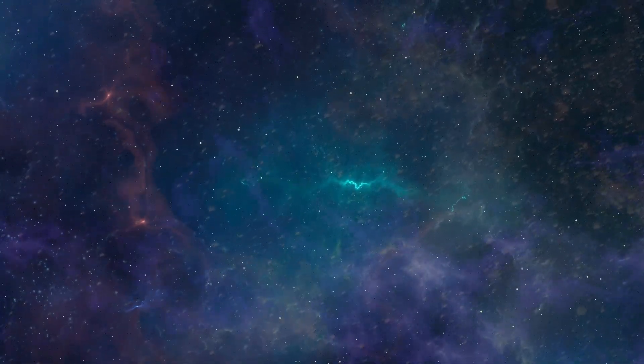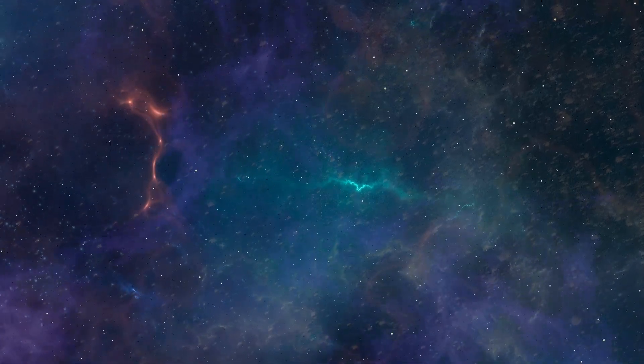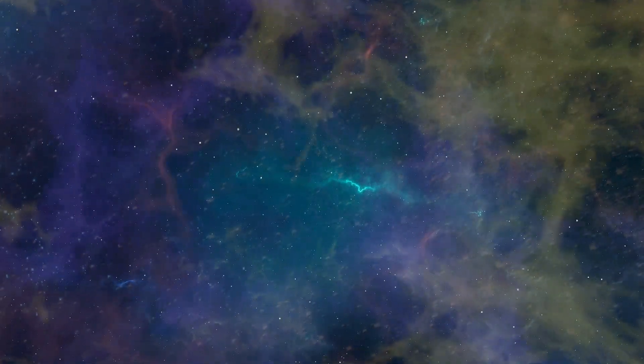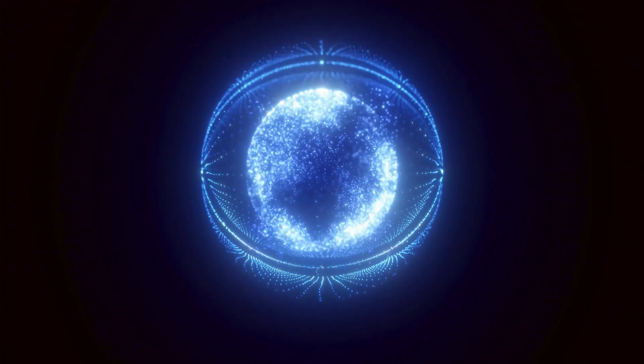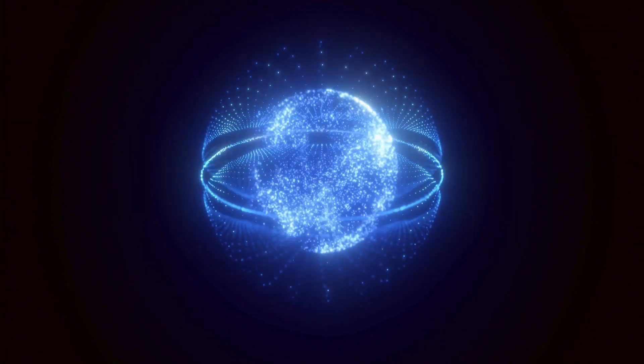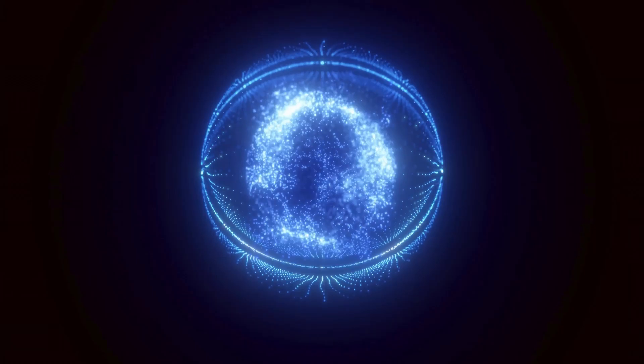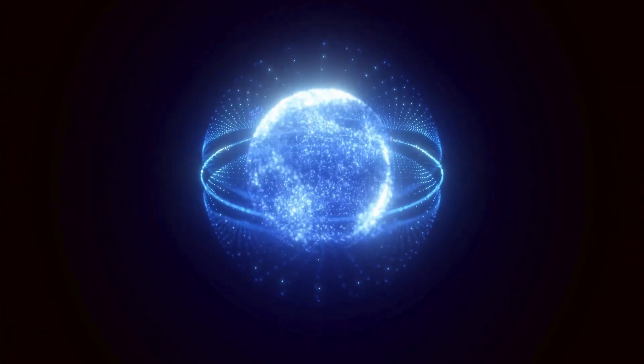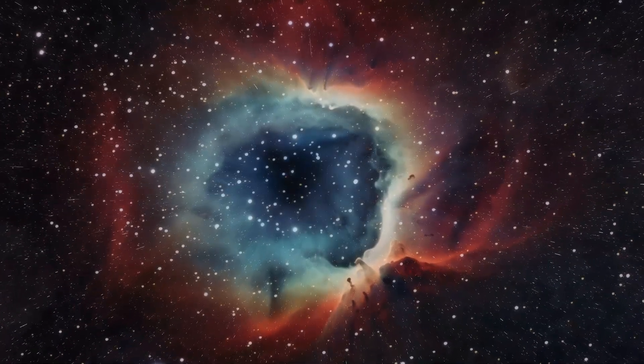But wait, there's more. Proxima b isn't alone in its orbit around the red dwarf star. It has a companion, Proxima c, which may reveal whatever other mysteries the star system holds. Perhaps there's another companion that we still haven't discovered. The mystery doesn't stop there.